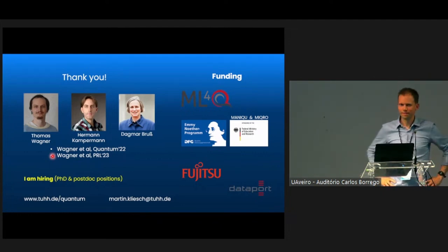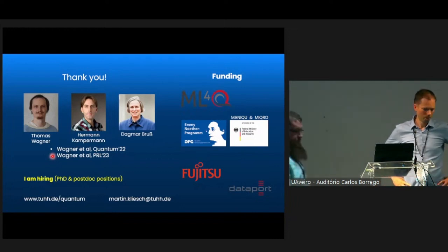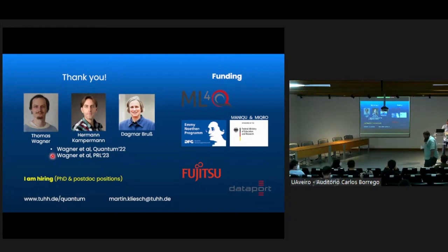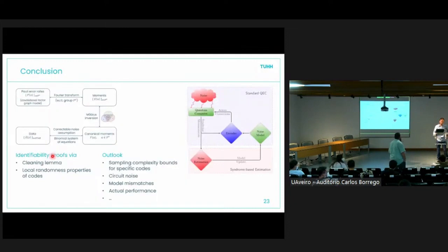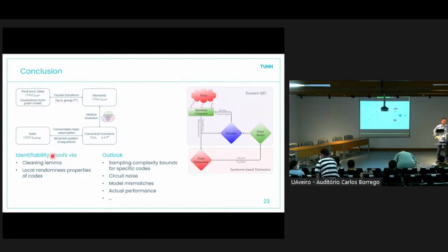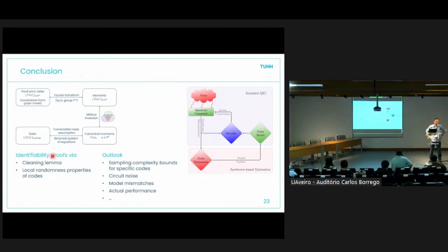Any questions? — Thanks for the talk. You said you might want to consider additional circuit noise. How would you include coherent noise given the strong reliance on a Pauli-stochastic channel? — I'm not sure that's possible. For our approach, we really need the noise channel to be diagonal in the Pauli basis. You shouldn't be able to observe the off-diagonal elements of a noise channel just from syndrome data. Maybe one could do this in the framework of subsystem codes, using the additional freedom to estimate off-diagonal elements, but that's completely open.